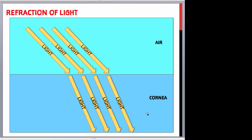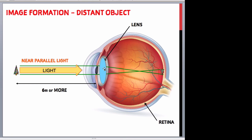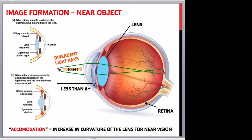Approximately 75% of the total refraction of light occurs at the cornea, while the remaining 25% comes from the focusing power of the lens. The lens also changes focus to view near or distant objects. When an object is more than 6 metres away, the light rays reflected from it are nearly parallel, and the lens bends them just enough so they fall exactly on the fovea centralis, where vision is sharpest. When an object is less than 6 metres away, the light rays are divergent and must be refracted more to fall exactly on the fovea centralis.